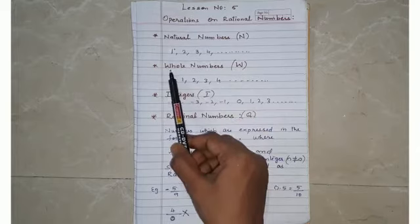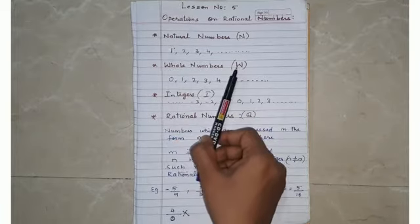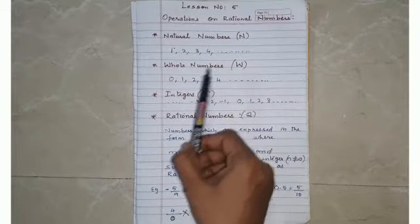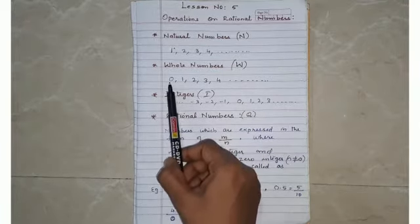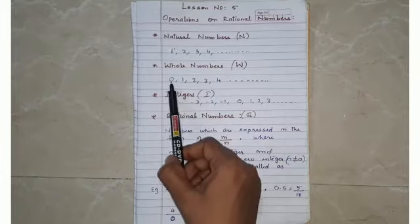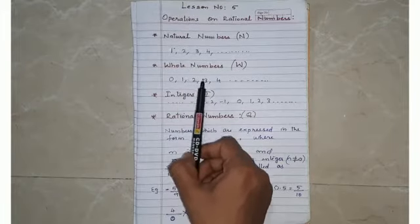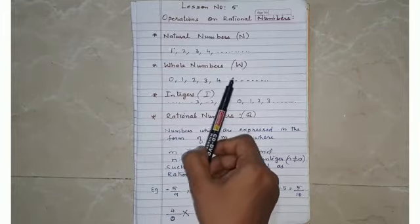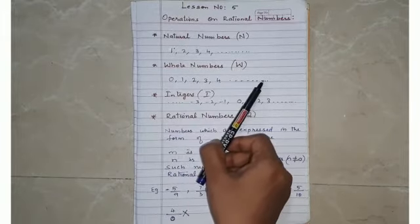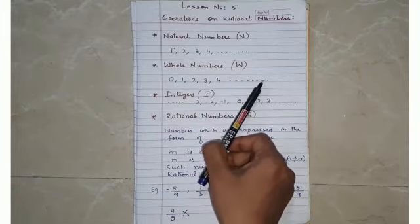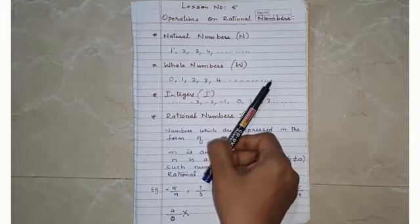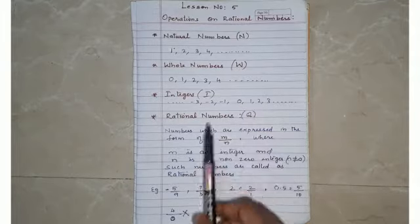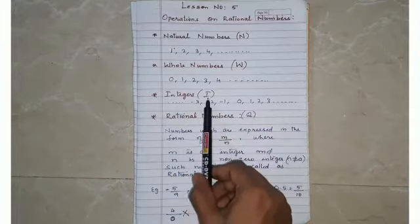Next are whole numbers. Whole numbers are represented as capital W and they start from zero. They include 0, 1, 2, 3, 4 and they are endless — we don't know where they are ending.